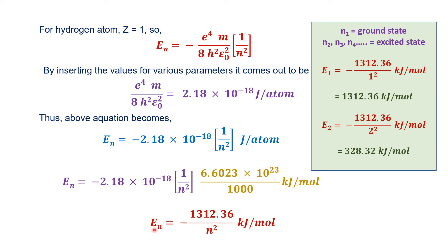We can calculate the energy of each orbital if we know the principal quantum number n. N=1 is the ground state; N=2, N=3, N=4 and so on are excited states. For E1: minus 1312.36 divided by 1² equals minus 1312.36 kilojoule per mole. For E2: minus 1312.36 divided by 2² equals minus 328.32 kilojoule per mole.